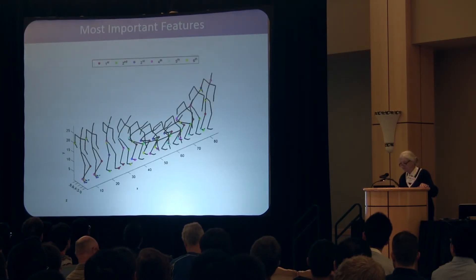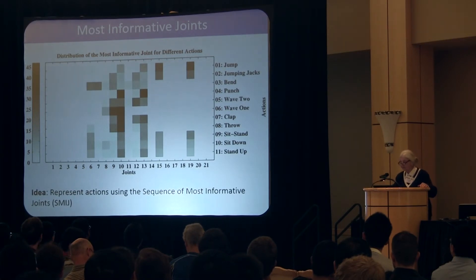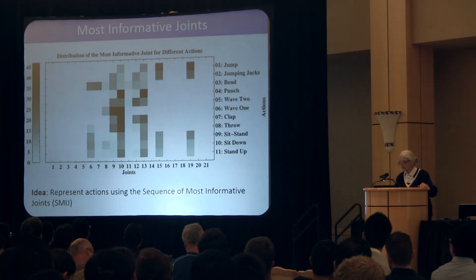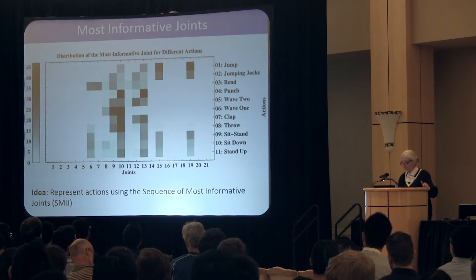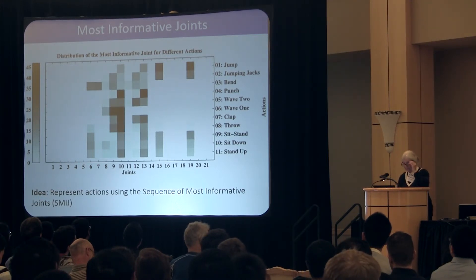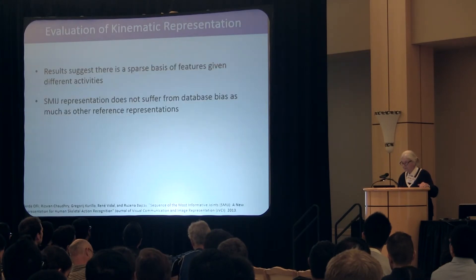So we do feature selection, and here are some results where you can see which joints are more energetic depending on the activity: jump, jumping jacks, bend, punch, and so forth. So you can do some classification, and I certainly want to look into what Mike was talking about this morning on how you can do this even better.